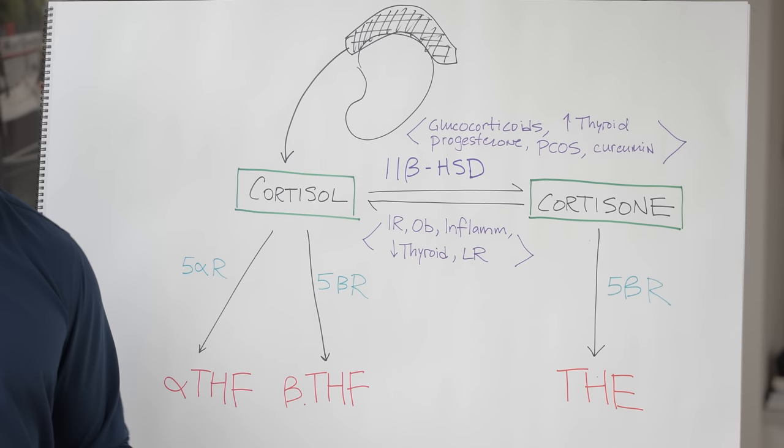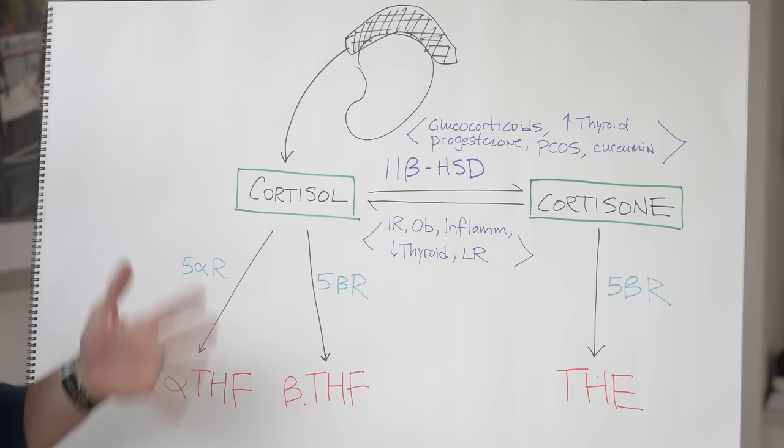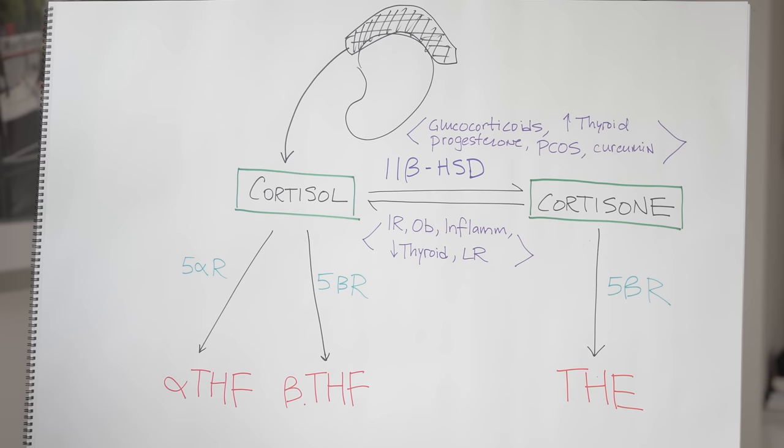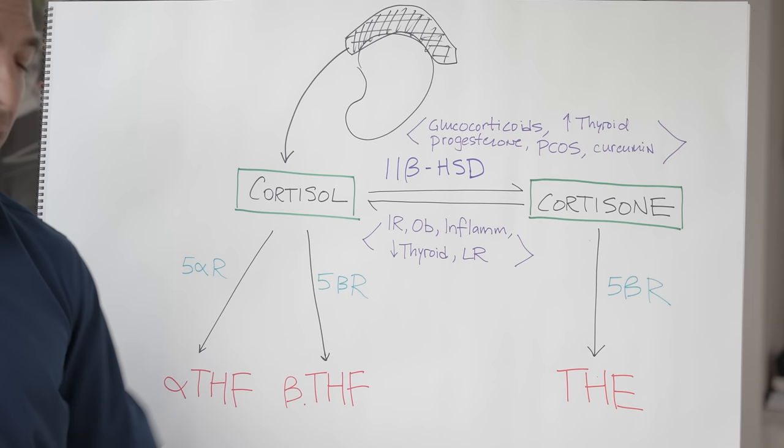So what regulates all of these things? Well, first of all, the regulation of turning cortisol into its metabolites and cortisone into its metabolite is regulated by enzymes called reductases. Again, I think the names of these enzymes are not really that important, but for the people who really care, 5-alpha reductase, 5-beta reductase, we're going to talk about these later with sex hormones. Never mind. You basically have some enzymes that will turn cortisol into these and cortisone into this.